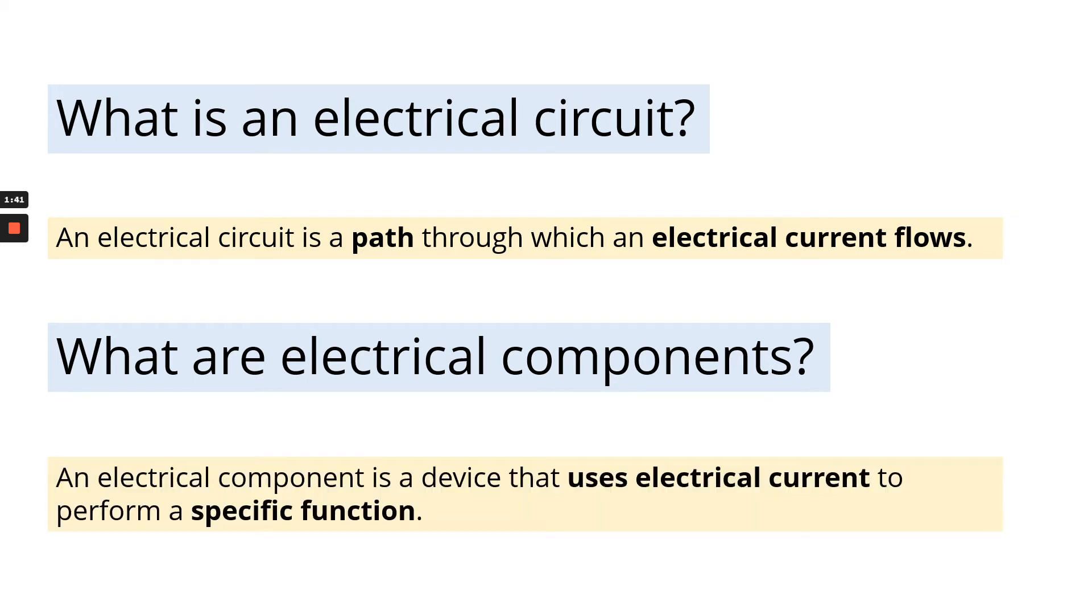They are devices that use electrical current to perform a specific function. So for example, a light bulb is an electrical component and that uses electrical current to produce light. So there's lots and lots of different components with each of them do something different. That's what we're going to learn today. But before that, can you pause the video here and make sure you've got the answer to those two questions written down in your booklet.